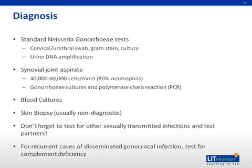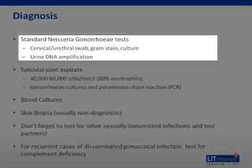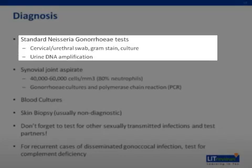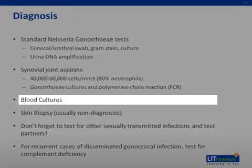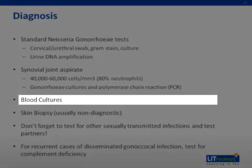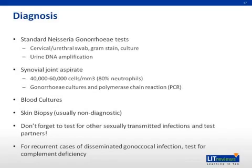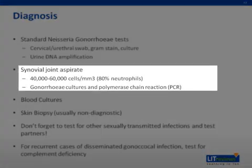Moving on to diagnosis of gonorrhea infections — the primary gonococcal tests are for localized mucosal infection and include cervical or urethral swab of the purulent discharge, followed by a gram stain or diagnostic culture demonstrating gonorrhea bacteria. In some clinics and hospitals, there is also a urine DNA amplification test, which is available at Duke. For disseminated gonococcal infection, blood culture is the gold standard for diagnosis. The synovial joint aspirate may also be useful, though many with disseminated infection do not have a drainable joint effusion.